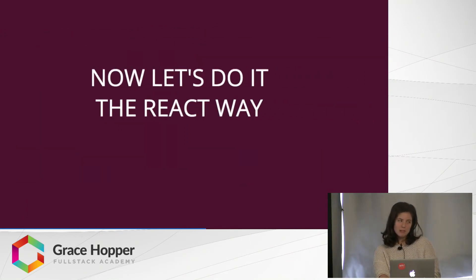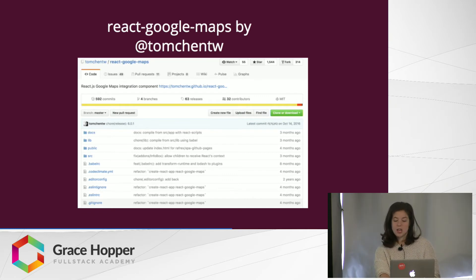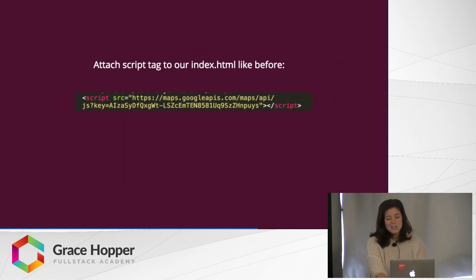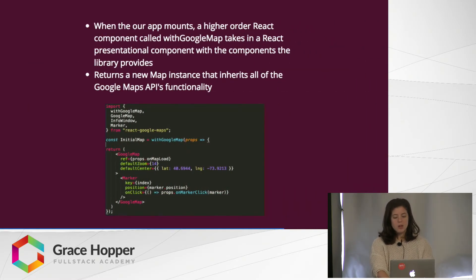Now let's do it the React way. There are several libraries out there that have attempted to integrate the Google Maps API with React, and I chose React Google Maps by Tom Chen because it easily allows me to declare Google Map components just like I do React components. To use this library, we still need to attach a script tag with our API key to our index.html. The module exports a higher-order component that is the bread and butter of this library — it's called withGoogleMap.